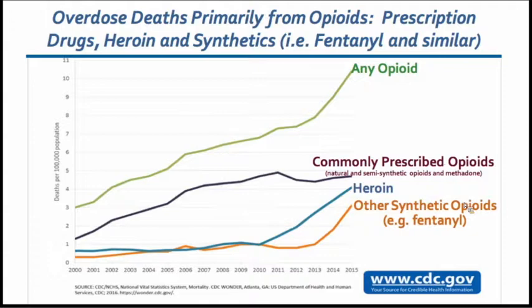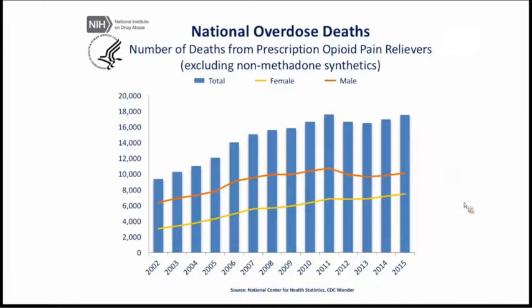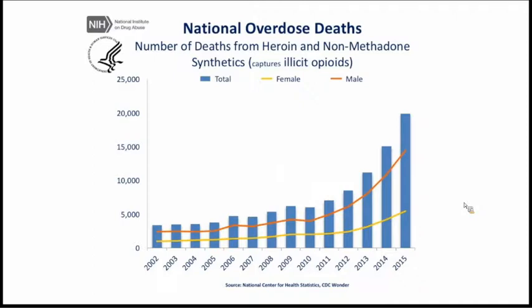This data from the CDC shows overdose deaths primarily from opioids, including prescription drugs, heroin, and synthetics including fentanyl. The overall opioid increase is still going strong, but if you break it down, it is really being driven by heroin and other synthetic opioids at this point. Deaths from prescription opioid pain relievers are plateauing for both men and women up to 2015, while deaths from heroin and non-methadone synthetics continue to rise.